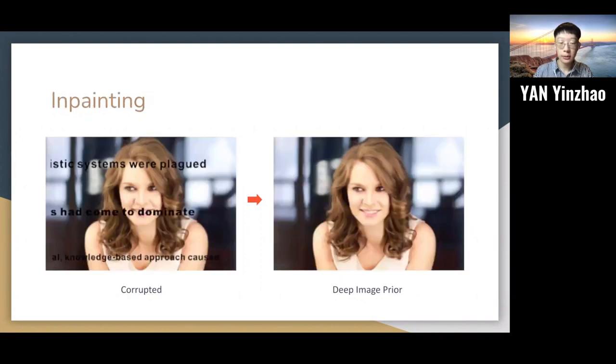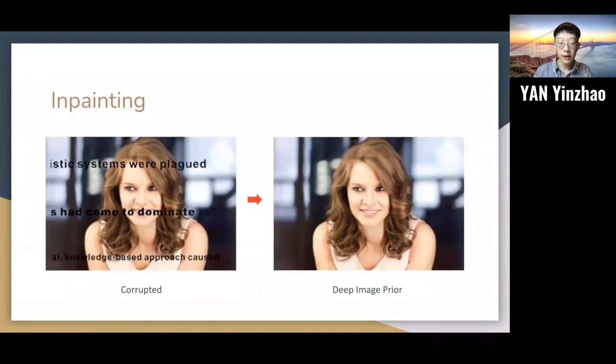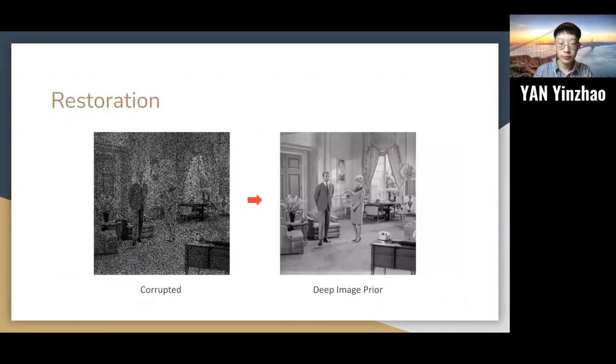And for inpainting, originally we have some text on the image or some empty area on the image. And after we applied the Deep Image Prior, we could remove the text or remove the blank area. And for restoration, originally we have an old image. And after we applied the Deep Image Prior, we could get a better result.